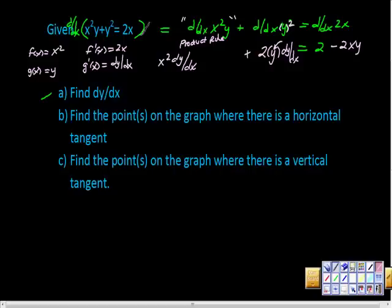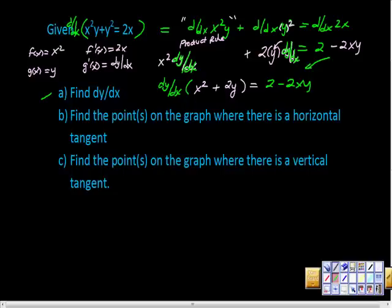And then from here, I'm going to factor out—let's take a look at this for a second. This is dy/dx here, and this has a dy/dx. So I'm going to factor out dy/dx, and we get dy/dx times x² + 2y is equal to this 2 minus 2xy. So that piece is just there. So I think we finally have the derivative here.